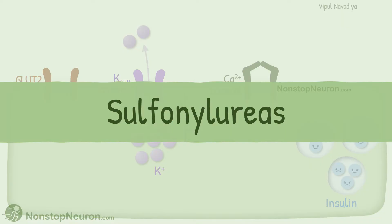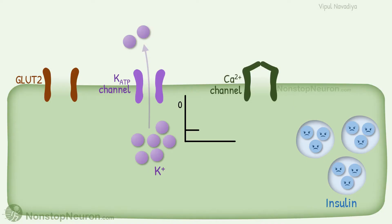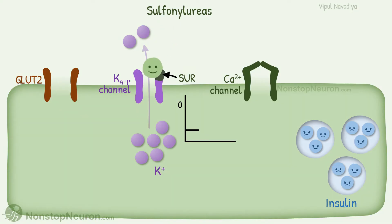Now let's talk about the mechanism of action of sulfonylureas. They have a shortcut to enter in this process of insulin release. These ATP-sensitive potassium channels have a sulfonylurea receptor subunit. Sulfonylureas bind to this site, and this binding decreases efflux of potassium ions. Subsequent events are the same as those happening physiologically.